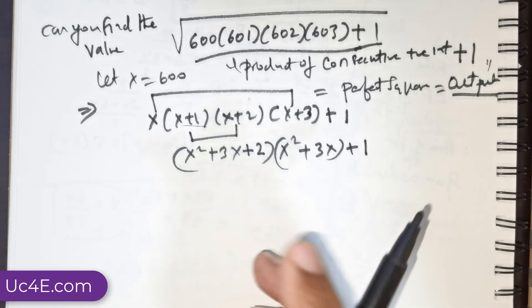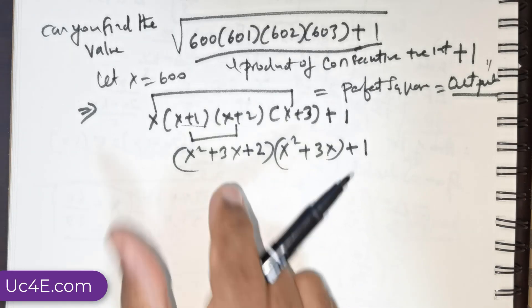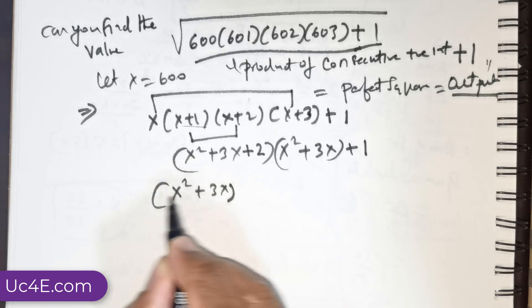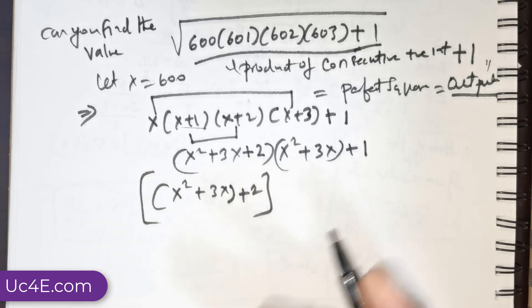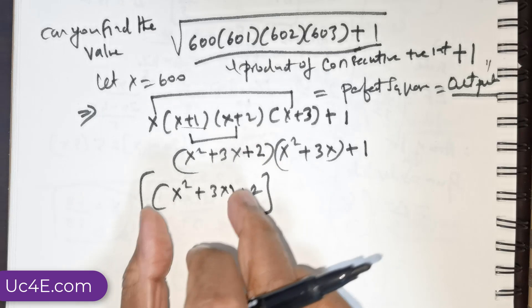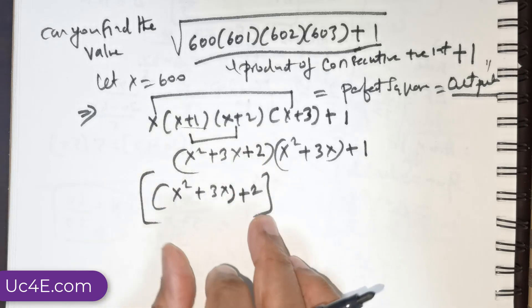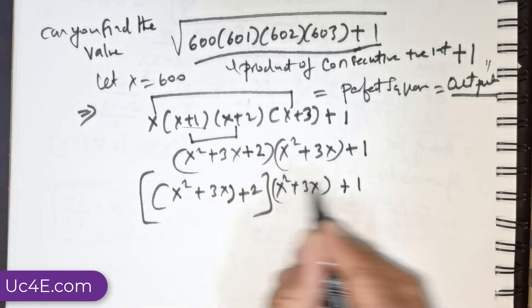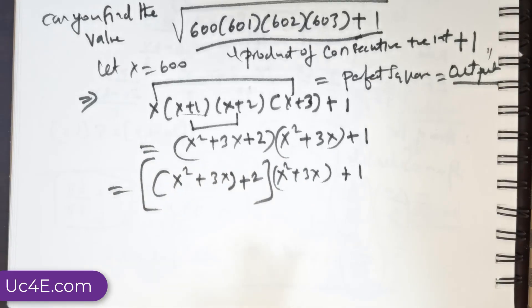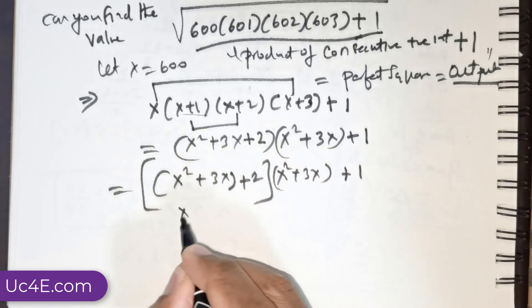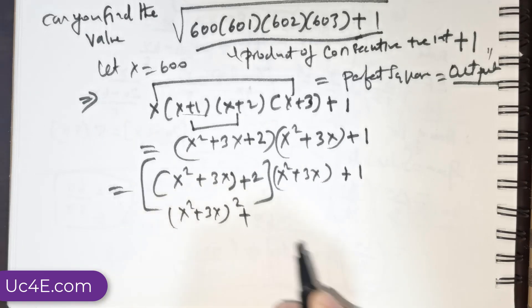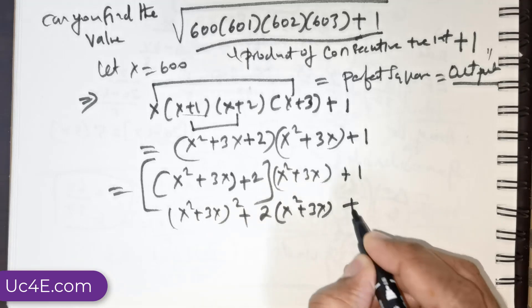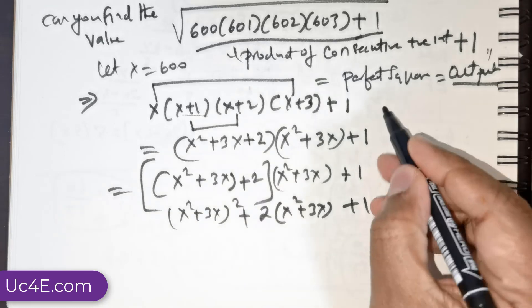I'd like to split this in a specific fashion. I write x² + 3x + 2 as (x² + 3x) + 2. So the product becomes (x² + 3x)(x² + 3x + 2) + 1, which expands to (x² + 3x)² + 2(x² + 3x) + 1.